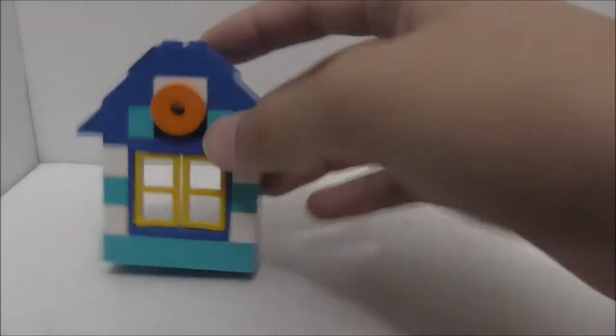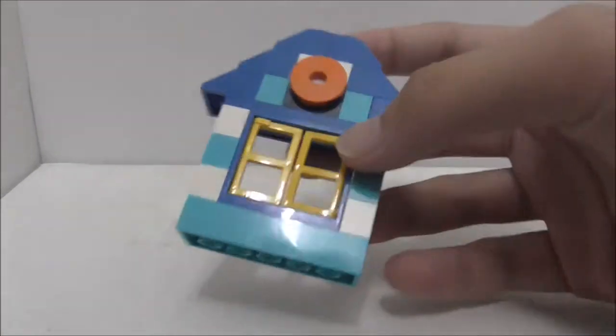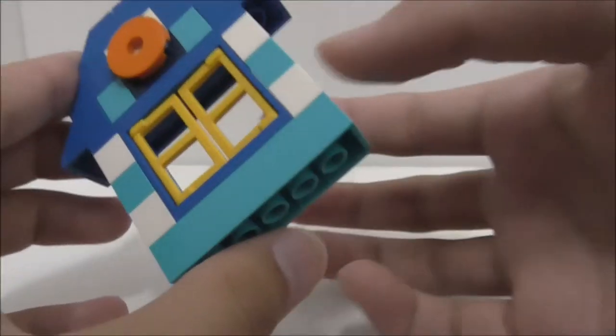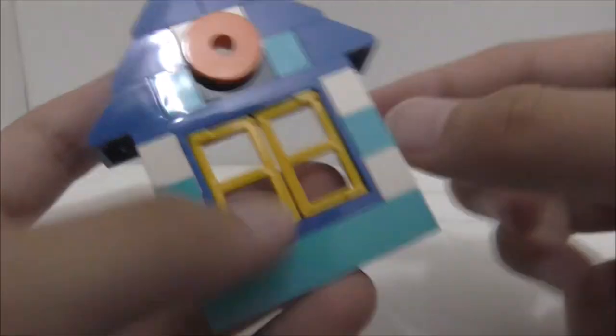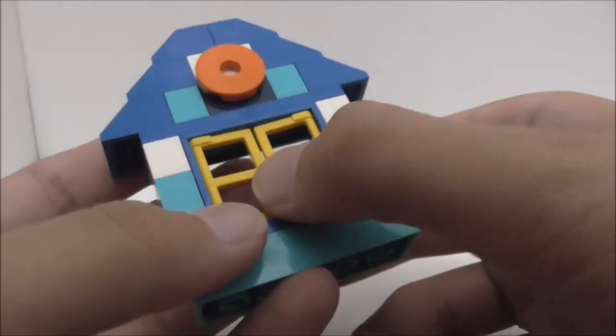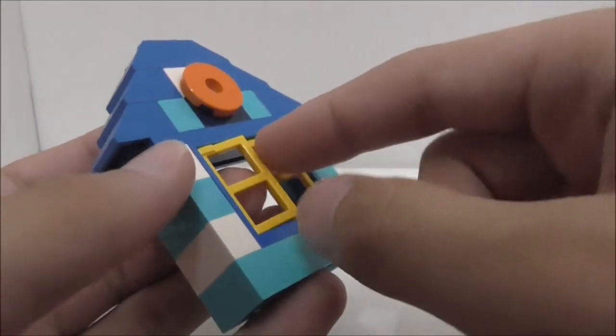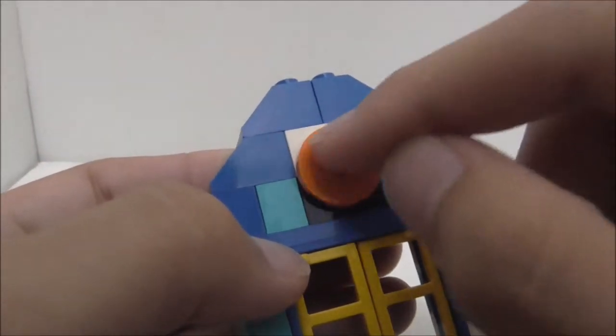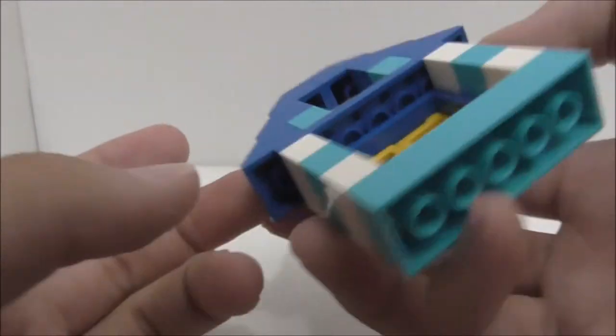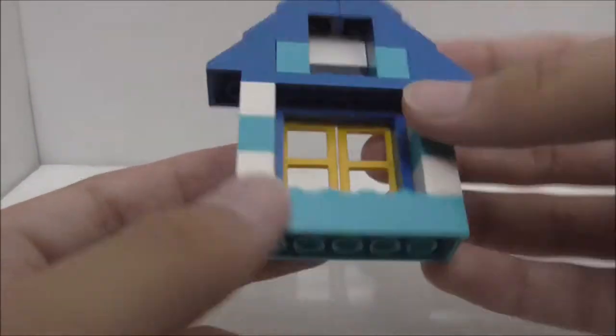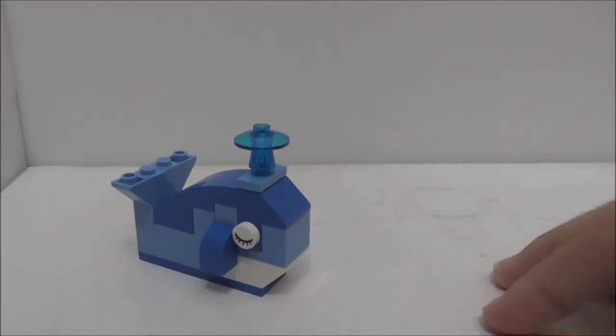I finished building the first stage build which is this house. It's a pretty simple build, pretty straightforward. It's nice you get this window piece because the only window piece in my inventory is the cross shape one which opens in only one direction. On top you got this round tile piece with a hole in the middle and these little pieces.